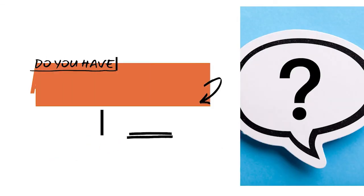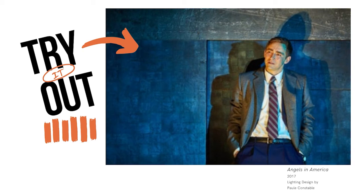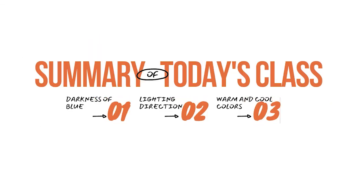If you have any questions, please drop them in the comment section, or if you're in my class, put them in the chat. Take a look at this image from Angels in America. Do you see how lighting designer Paul Constable uses a warm color from one direction and a cool color from the other? This way, the design allows us to see all the action without losing any of the shading. You've learned a lot today: why blue stands in for night, why lighting designers hang lights in the positions they do, and how an effective combination of warm and cool lights can maintain visibility without losing depth or contour.